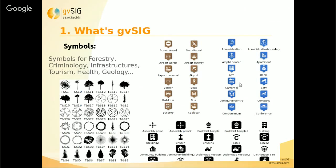One of the most important functionalities in GBC is that we can apply symbology and create our own symbol libraries. If we have several icons or symbols on our computer, we can create our own symbol library. There are also several symbol libraries that we can download from the Adams Manager in GBC, for example for forestry, infrastructures, tourism, and more.